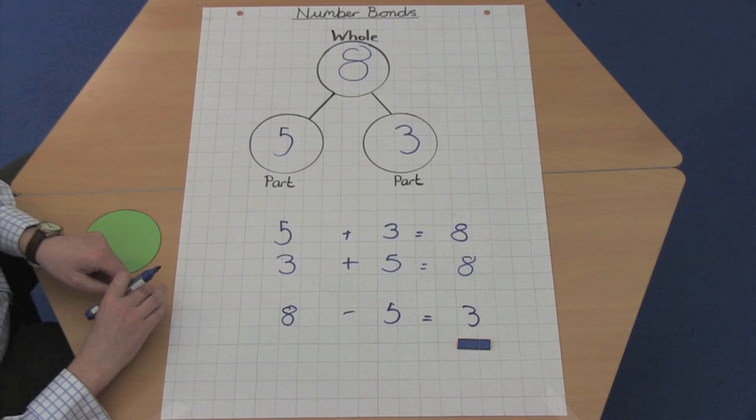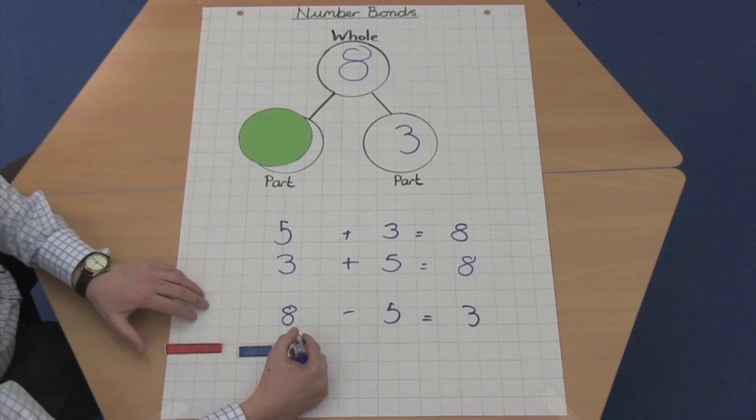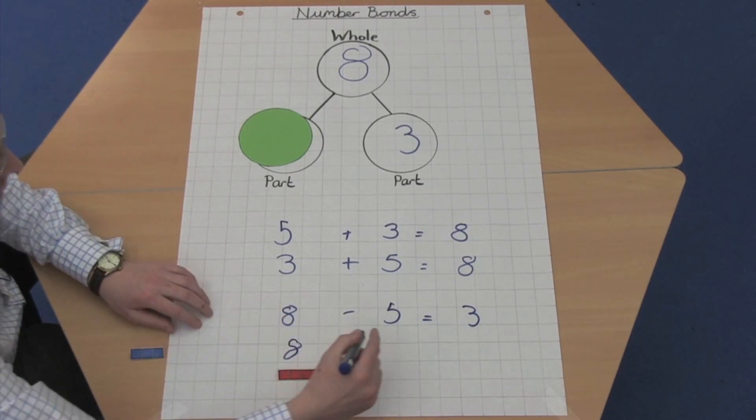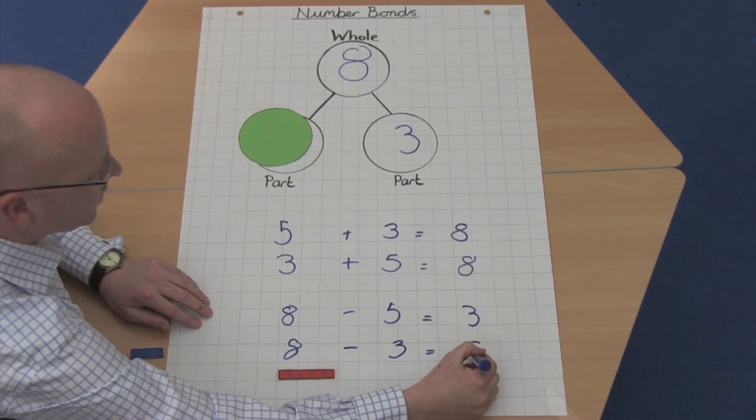And again, this can be done in any order. So if we start with our eight and we take away our three, we'll be left with five.